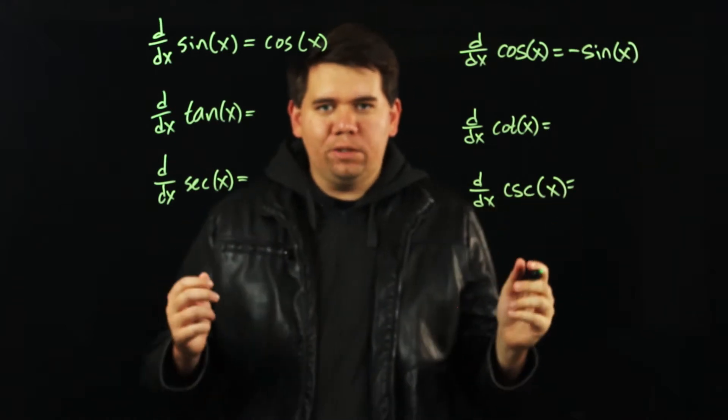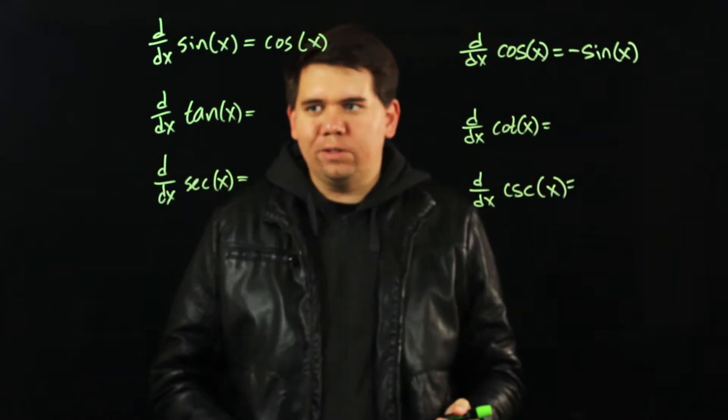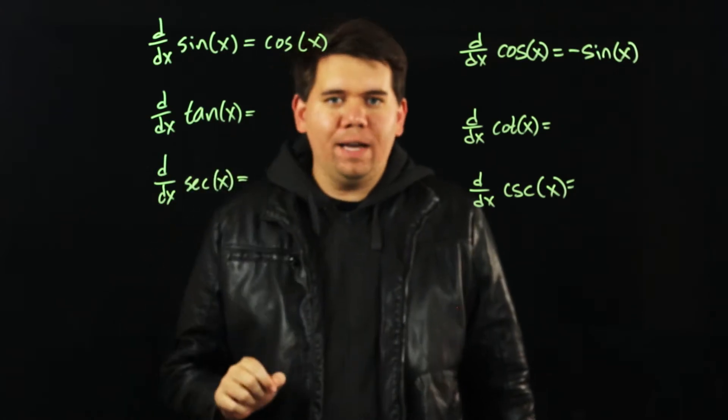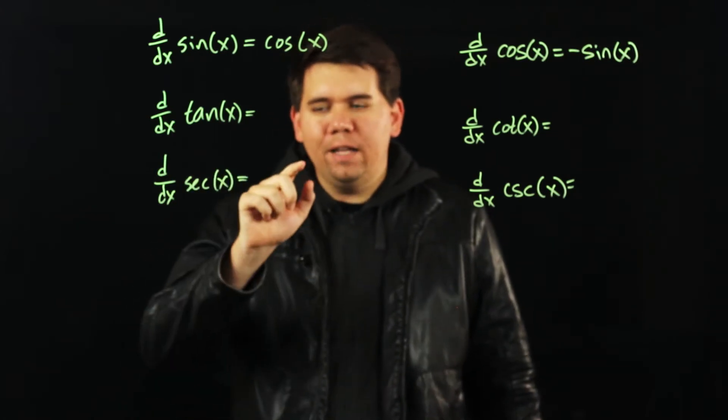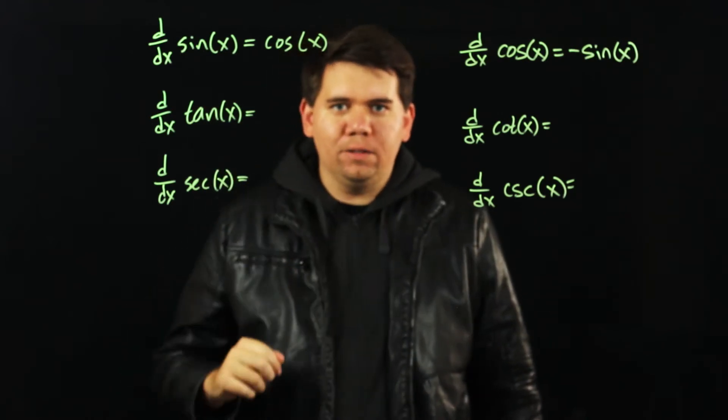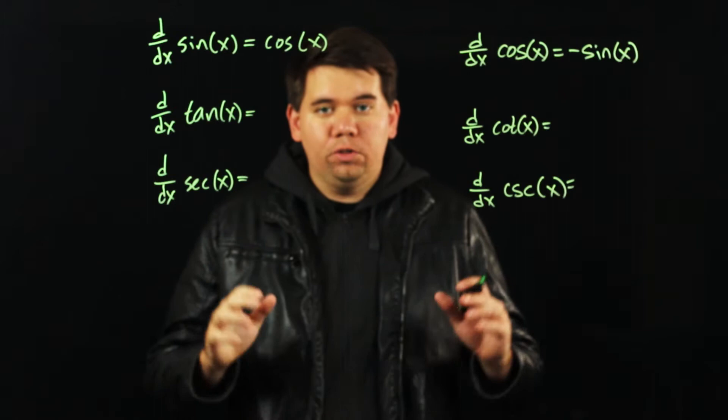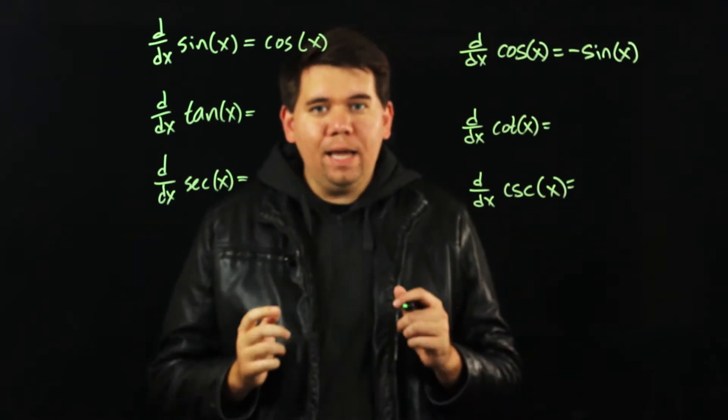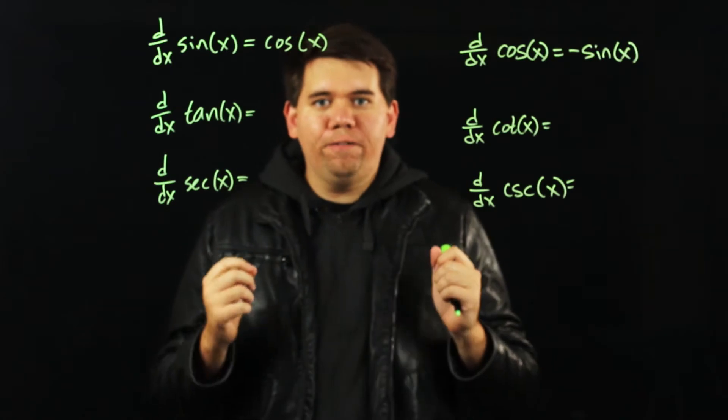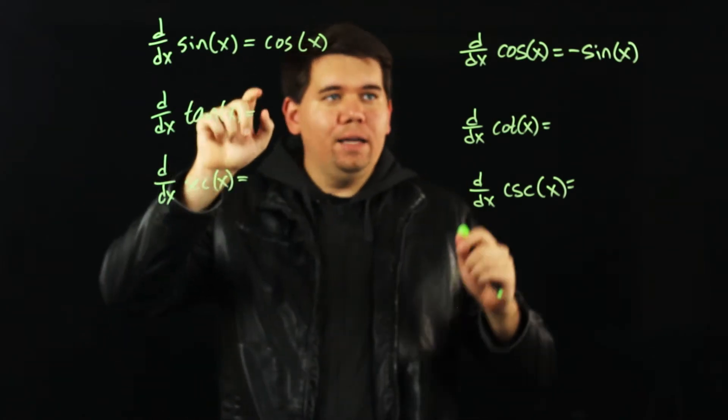Now you might think we need to derive each of these from scratch using the limit definition. For example, the derivative of tangent of x is the limit as h goes to 0 of tangent of x plus h minus tangent of x all over h. And certainly you can do that approach, but instead we can use a shortcut. All of these other trig functions are defined in terms of sine and cosine.